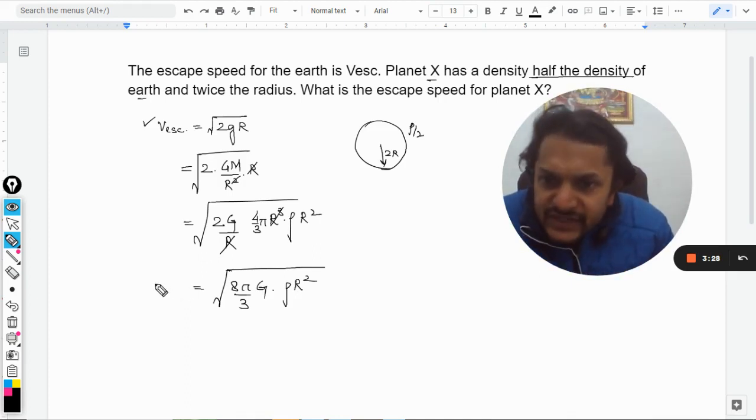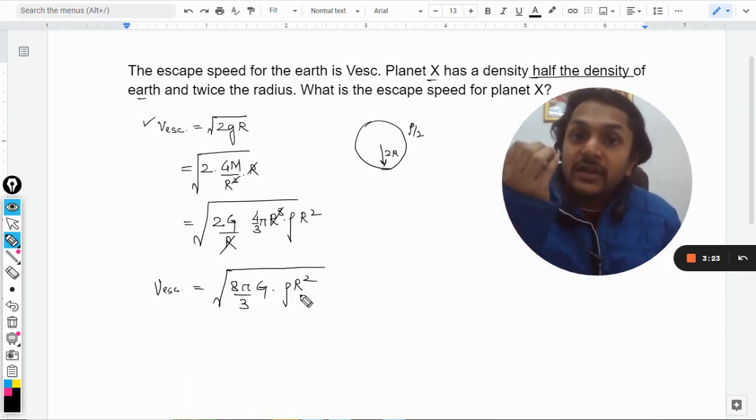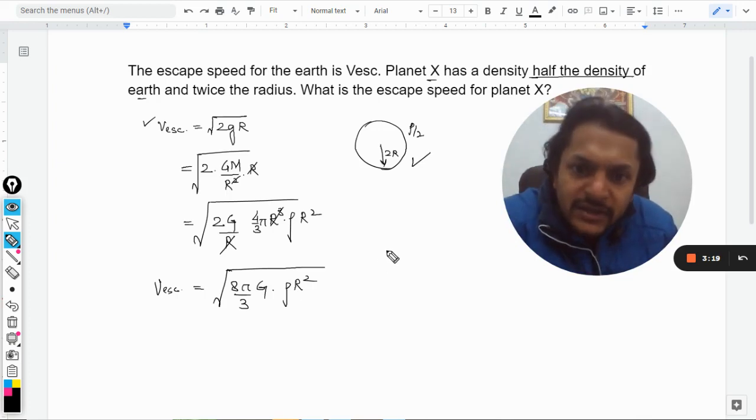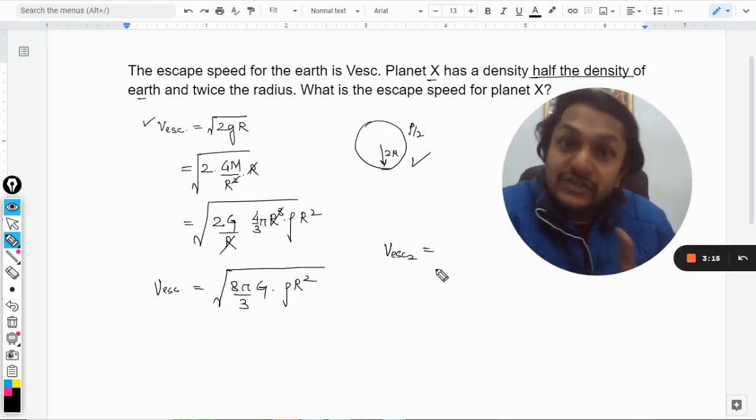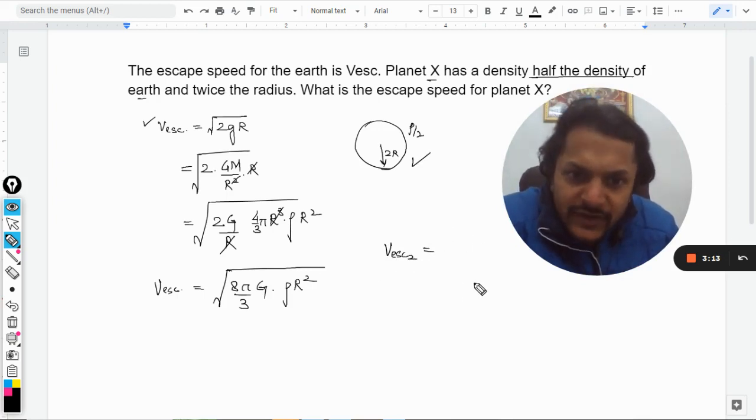So if this is the escape velocity of earth, I can say that rho is the density of the earth and r is the radius of the earth. But now we are talking about another planet. So we can just take it as the escape velocity for the second planet and I can substitute the values now.